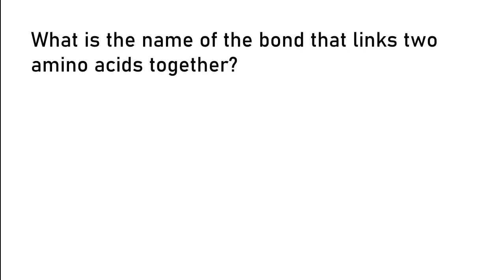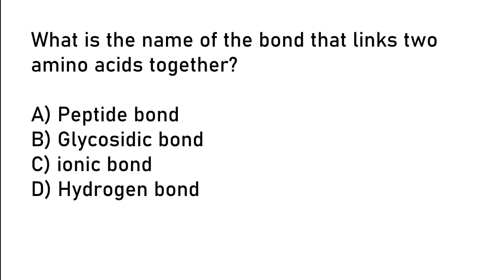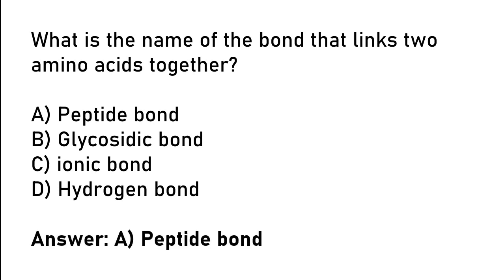What is the name of the bond that links two amino acids together? Peptide bond, glycosidic bond, ionic bond, hydrogen bond. So the correct answer is option A. Peptide bond.